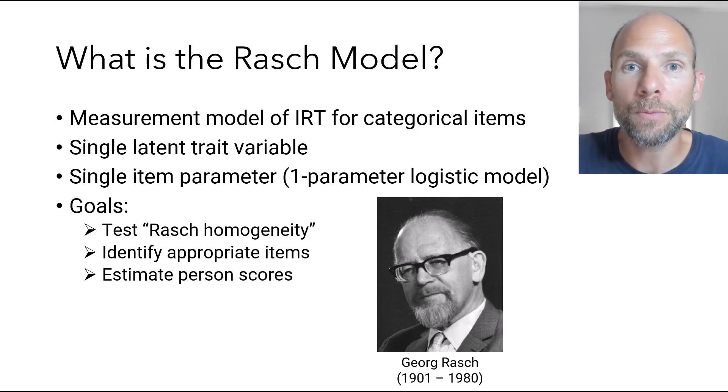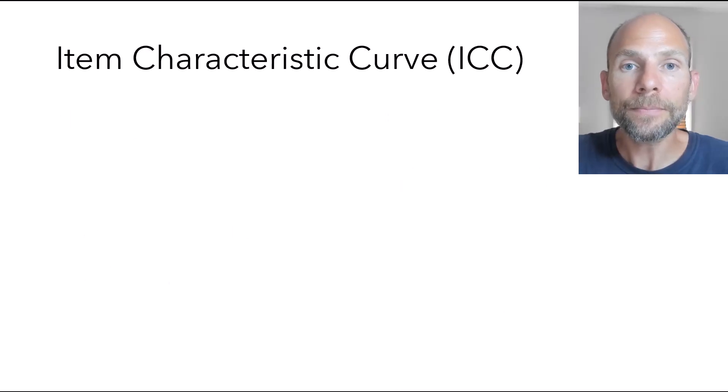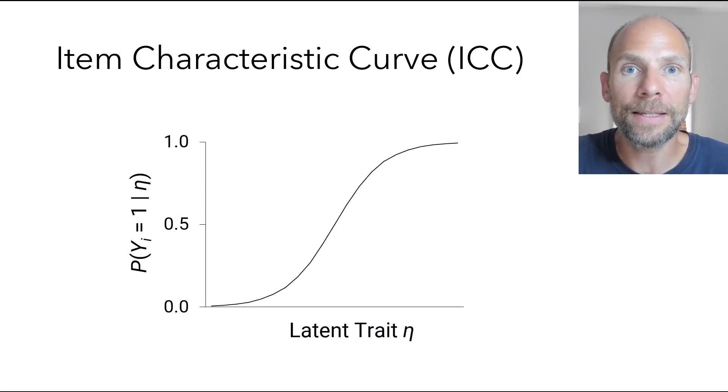So let's take a look at the Rasch model in a little bit more detail. One thing that's often useful for that is to look at so-called item characteristic curves that describe the relationship between the latent variable in the Rasch model and the observed item responses. How are those connected? How are the item responses connected to the underlying latent variables? And so you find this characteristic S-shaped curve in item response theory. And that also applies to the Rasch model.